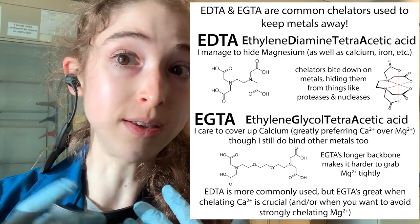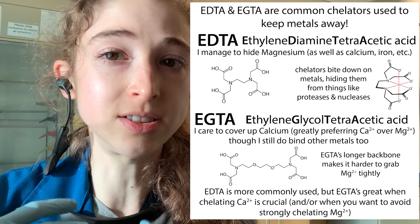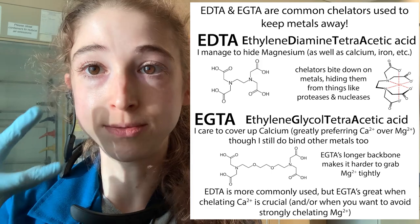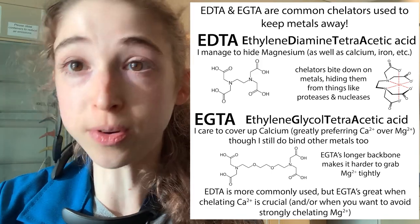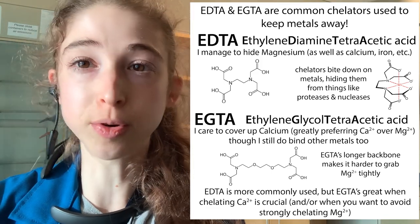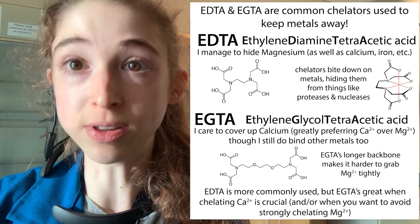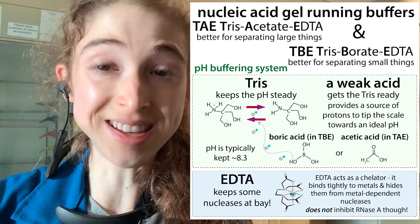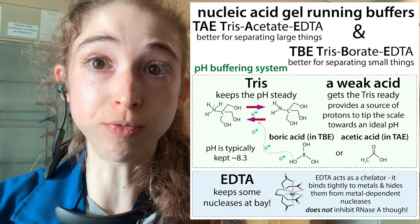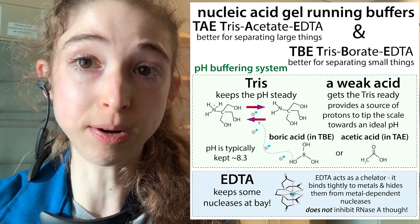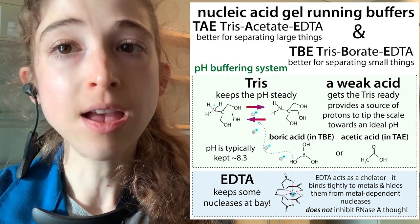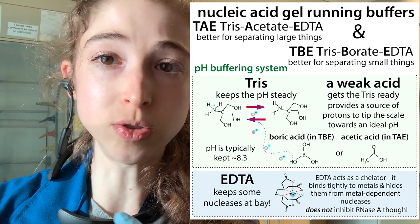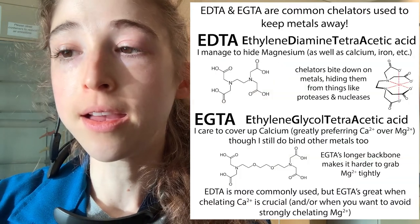This is why it's really helpful to use such a chelator if we're wanting to hide metals from other sorts of molecules. It's really useful in the lab, especially in cases where we're trying to keep things away, like nucleases. When you think about TAE buffer — that's tris-acetate-EDTA — this is a common buffer used when running nucleic acid gels to separate DNA or RNA pieces by size. Or TBE, tris-borate-EDTA. In most of these cases, the EDTA is going to help keep those nucleases away.